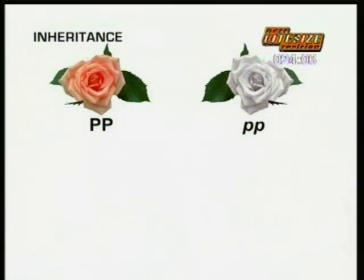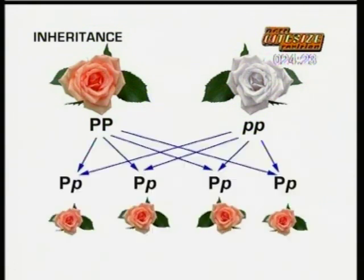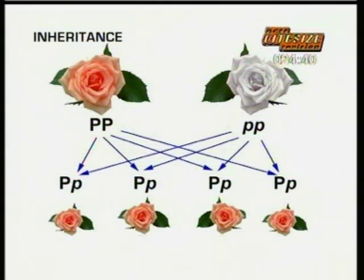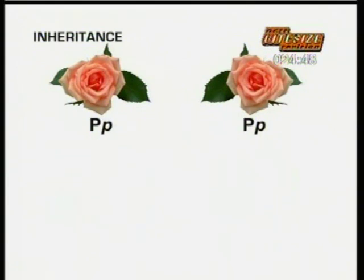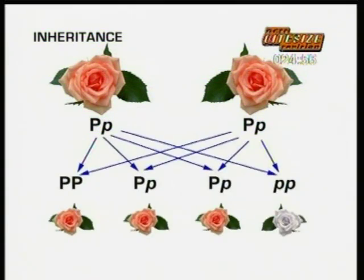Mendel started with pure pink flowers, with both alleles for flower pigment the same — capital P, capital P. A white flower plant must have two small p alleles for the recessive characteristic to show. When these two varieties are crossed, every possible combination in the first generation contains one capital P allele, so all offspring will produce pink flowers, even though they carry the recessive small p genes. They are known as first generation hybrids. When two of these hybrids are crossed, three of the four possible combinations still contain the dominant capital P allele. Only one in four offspring contains two recessive small p alleles, meaning only that flower will come out white.